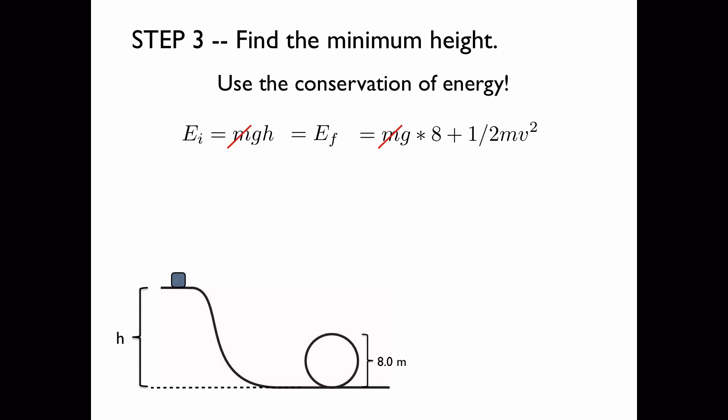We want to solve for h, so we can cancel out the m's. And then we can divide both sides by g, and on the left hand side we have h by itself, and on the right hand side we have 8 plus v squared over 2g.